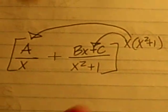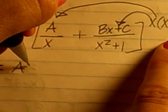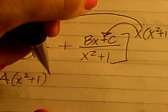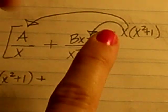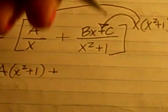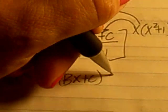And we'll go ahead and distribute these to both terms and cancel whatever cancels. So here in this case, the x's term cancel, which gives me A times x squared plus 1, and plus, right here, the x squared plus 1 cancels, leaving with just the x. So we'll have Bx plus C times x.